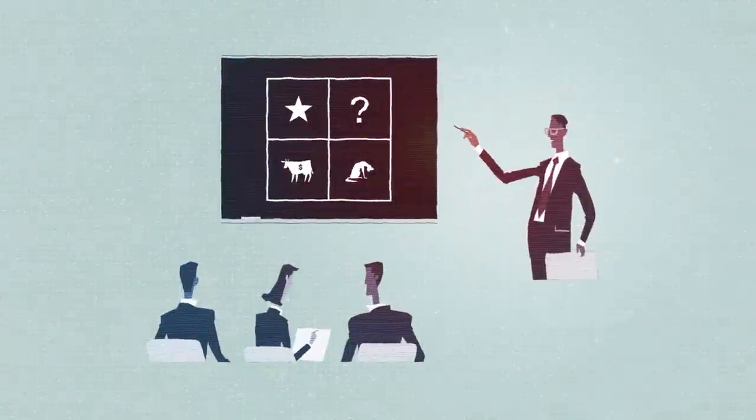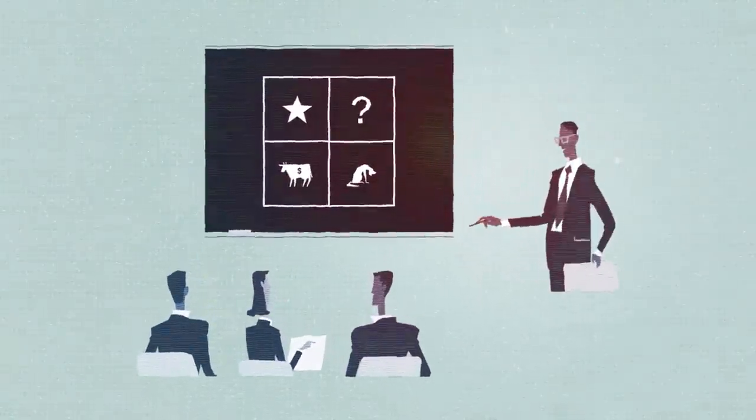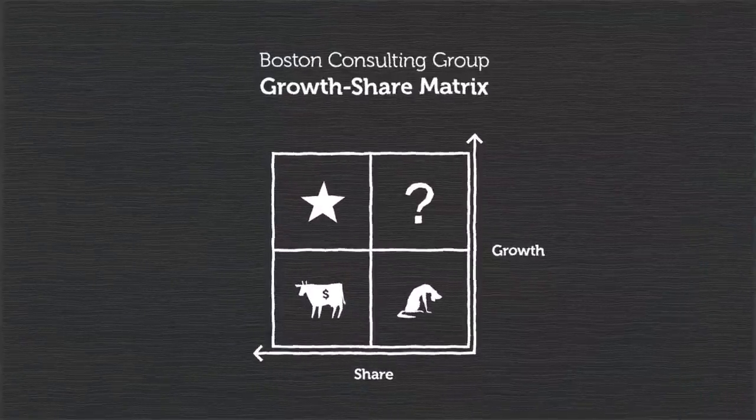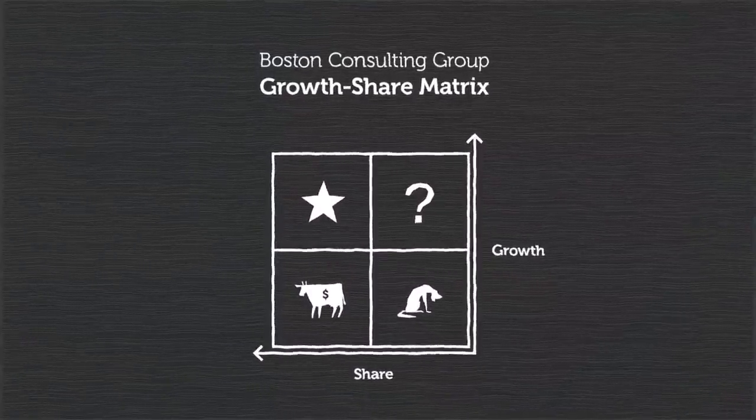In the 70s and 80s, about half the Fortune 500 used the BCG growth share matrix to decide where to invest.